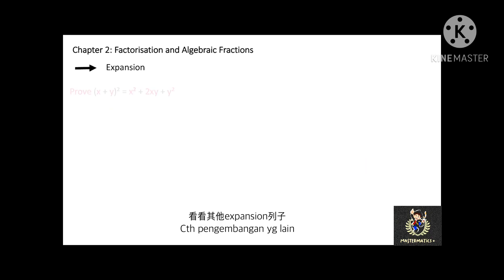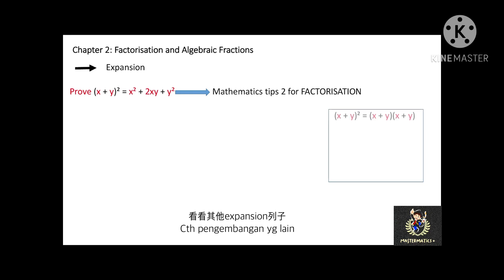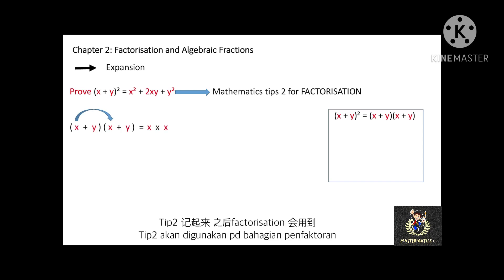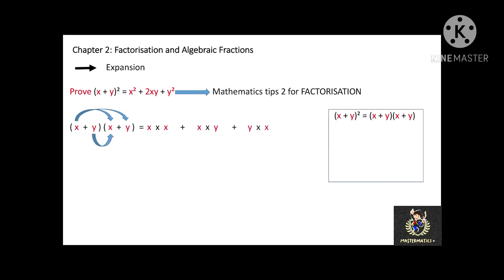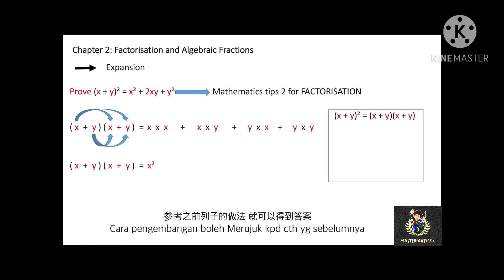Next, let's prove that (x plus y) squared equals x squared plus 2xy plus y squared. Please mark this as Mathematics Tips 2, because you will use it for factorization in the next topic. The bracket (x plus y) squared equals (x plus y) multiplied with (x plus y). Then just perform the expansion like the previous example, and you will get x squared plus 2xy plus y squared.